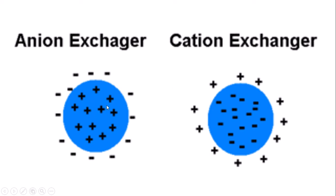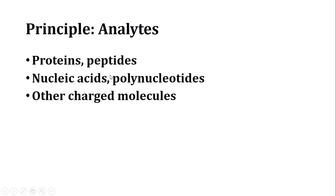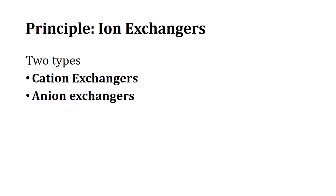We are not talking about the charge the exchanger itself carries. Analytes that can be separated include proteins, peptides, nucleic acids, polynucleotides, and other charged molecules. Even metal ions can be separated, which is relevant to chemistry applications. There are two types of ion exchangers: cation exchangers and anion exchangers.